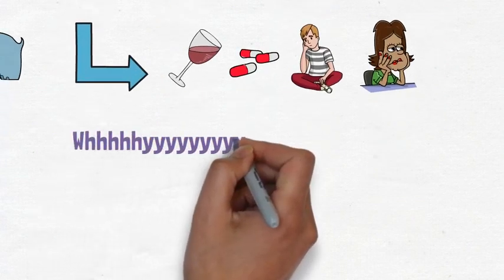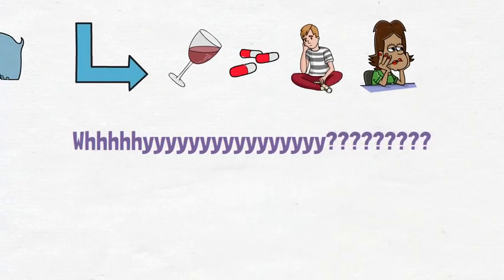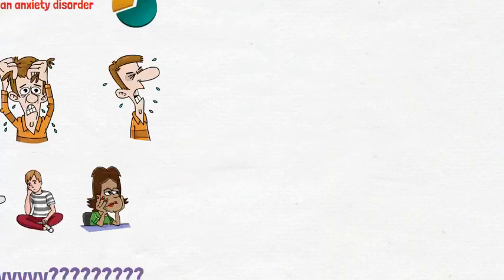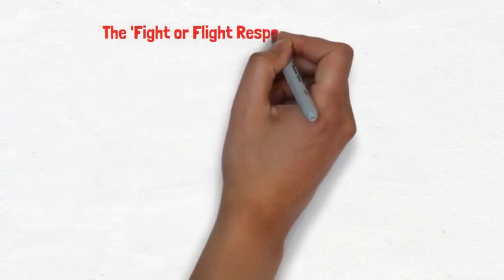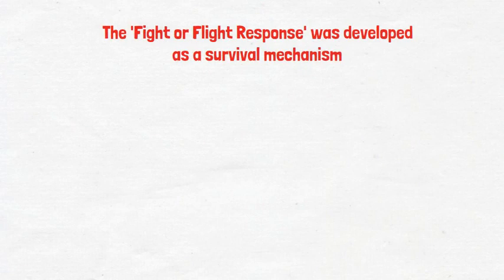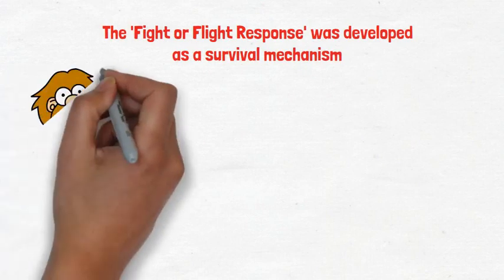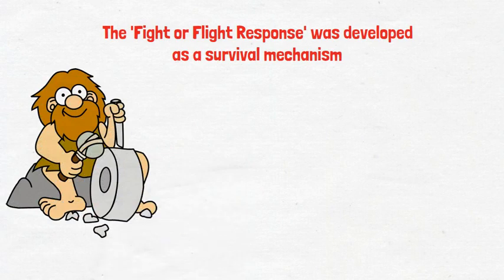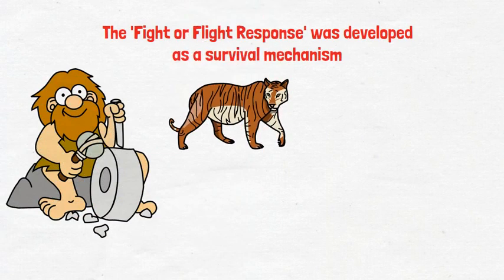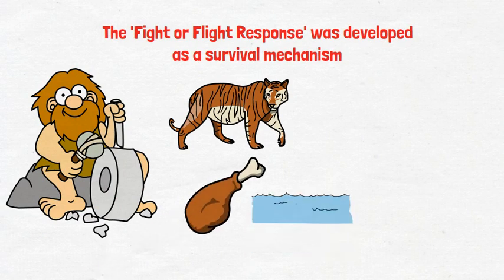So why do we have this anxiety response? What's the point? The anxiety response, also known as the stress response or the fight or flight response, is believed to have been developed back in the caveman days as a survival mechanism. Back in these days, our ancestors were constantly being exposed to survival threats, things such as vicious predators, shortages of food and resources, and severe weather conditions and temperatures.